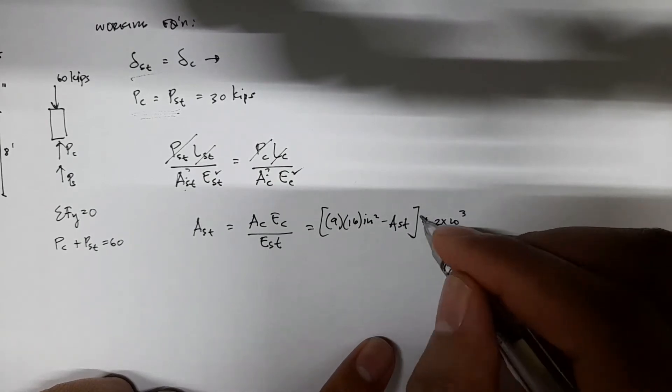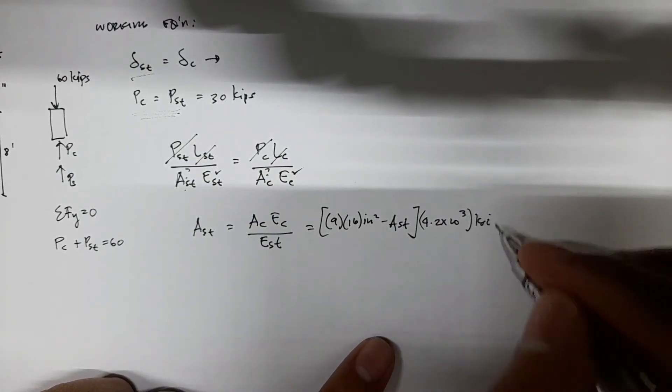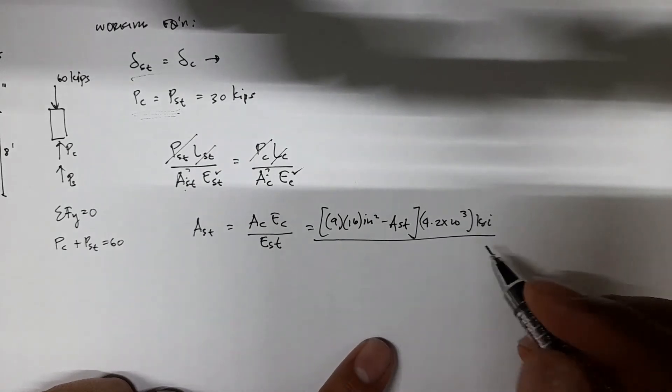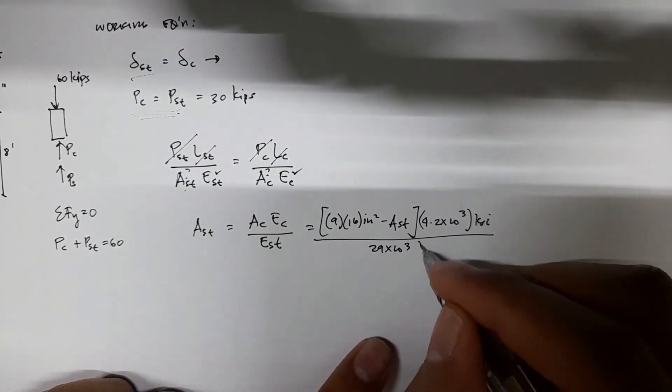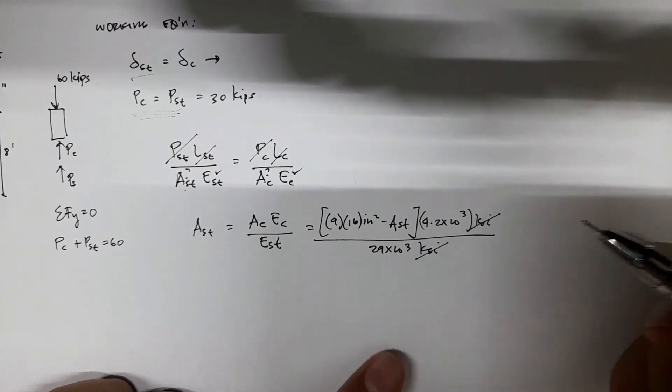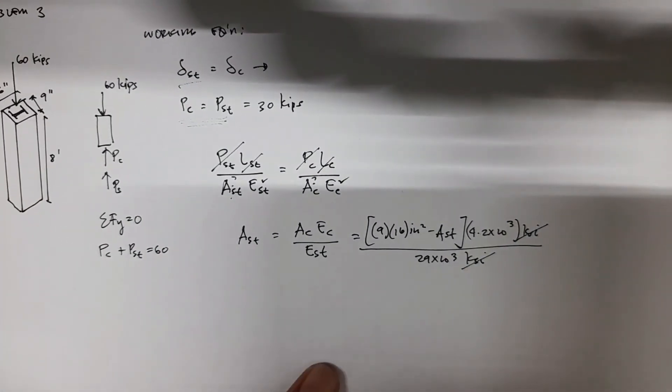We have 4.2 times 10³ ksi divided by 29 times 10³ ksi. The 10³ terms cancel.